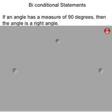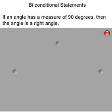So, for example, if your original statement was, if an angle has a measure of 90 degrees, then the angle is right. True. No way to prove that false.